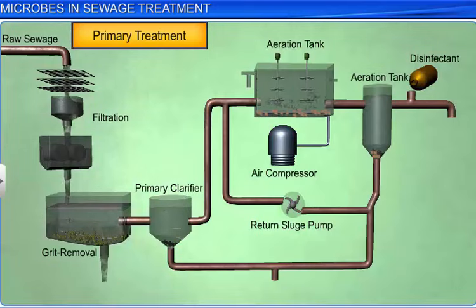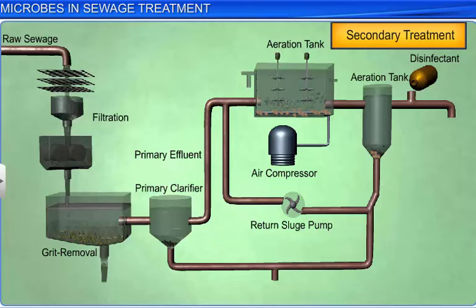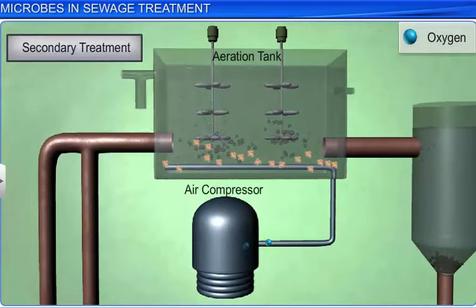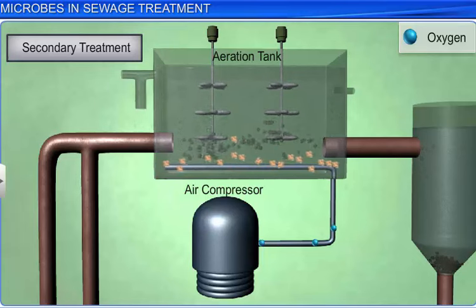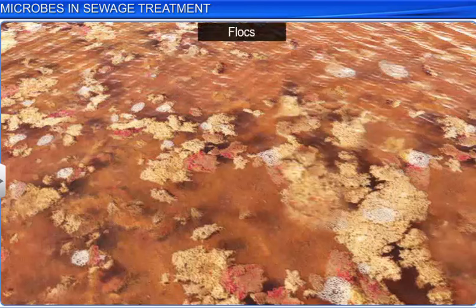Primary effluents are now transferred from the primary settling tank to large aeration tanks for secondary treatment, also known as biological treatment. Secondary treatment aims to reduce organic matter in the effluents. In the aeration tanks, the effluents are constantly agitated mechanically and oxygen is pumped into them. As a result, aerobic bacteria naturally present in the effluents grow into flocs, which are mesh-like structures formed by groups of bacteria in association with fungal hyphae or filaments.